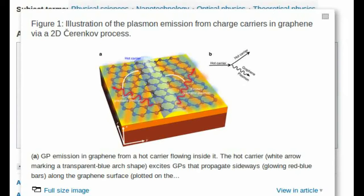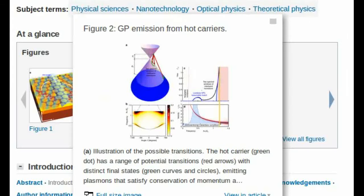Graphene has the ability to trap light in modes called surface plasmons. Plasmons are a kind of virtual particle that represents the oscillations of electrons on the surface. The speed of these plasmons through graphene is a few hundred times slower than light in free space.